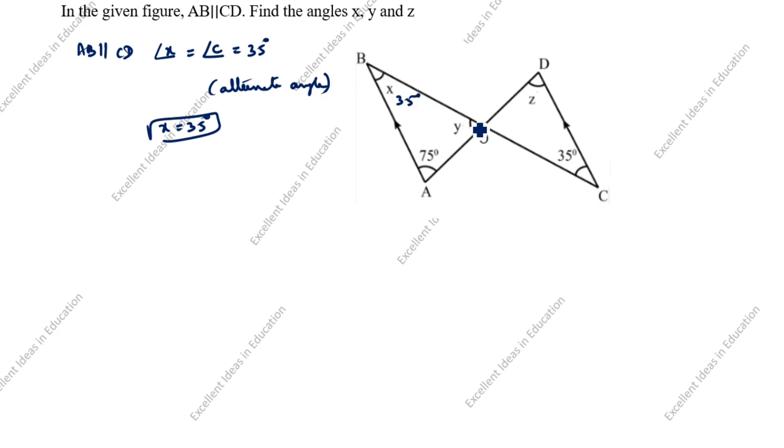Next what we need to find is Y. So we will take this triangle, triangle BOA. Sum of all three angles is 180 degrees.